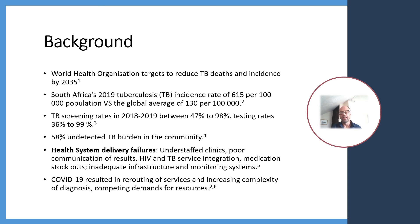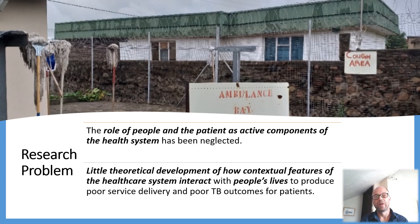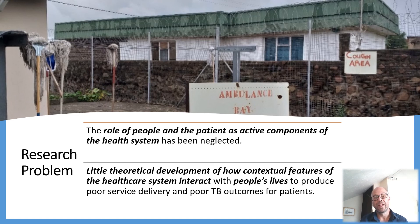Although this study took place prior to COVID-19, there is arguably an even more pressing need for interventions to meet WHO targets. Aside from those targets, the role of people and the patient as active components of the health system have been neglected, with patient-level factors negatively impacting on care-seeking and adherence. Despite extensive documentation of TB program failures, there has been little theoretical development of how contextual factors of the healthcare system interact with people's lives to produce poor service delivery and poor outcomes for patients.